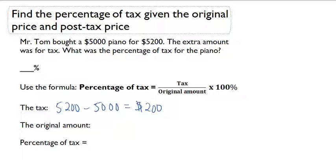The original amount is $5,000. So our percentage of tax has to be $200 divided by $5,000 times 100% to change it into a percent.